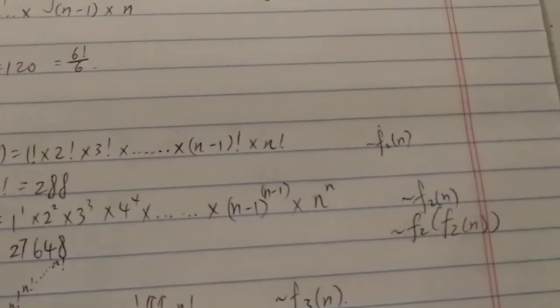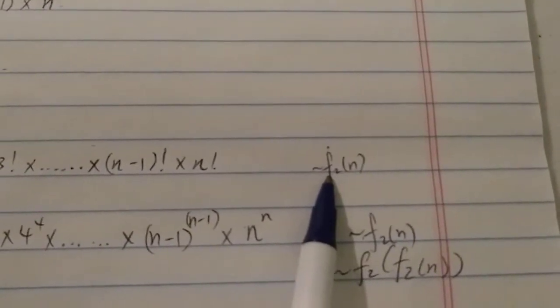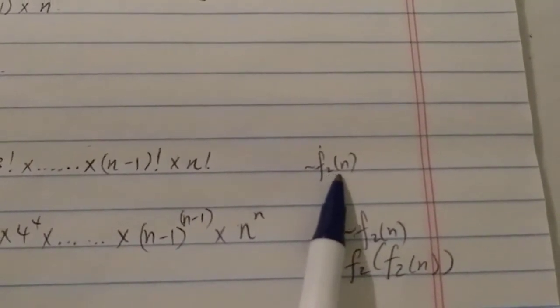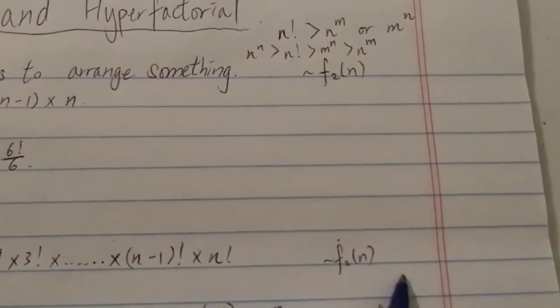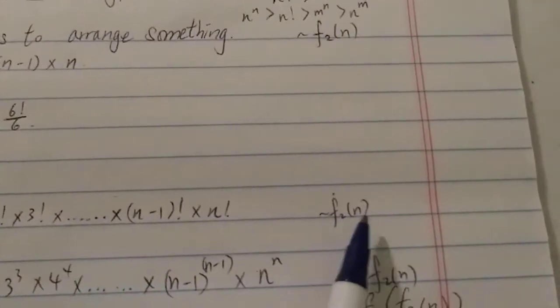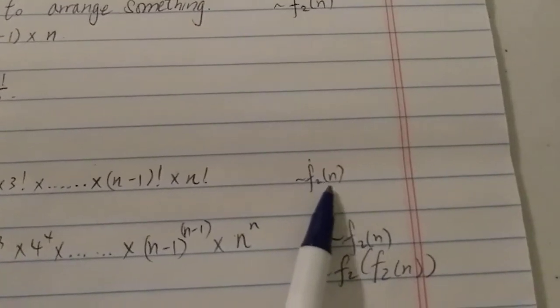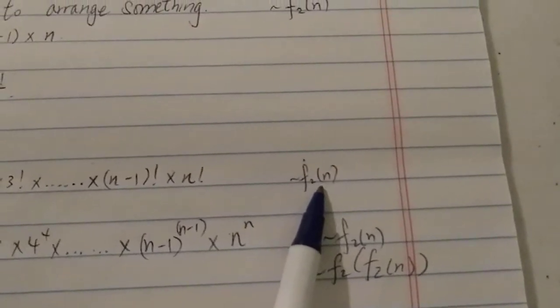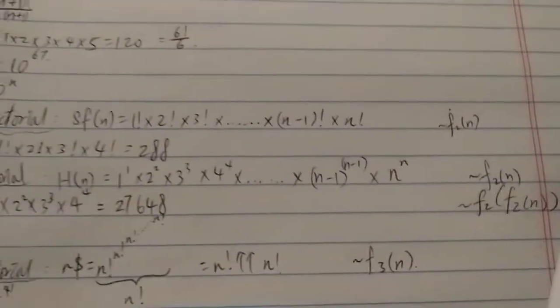In terms of the fast-growing hierarchy, the super factorial is still around f₂(n) — slightly faster than the regular factorial, but not quite reaching f₃(n).